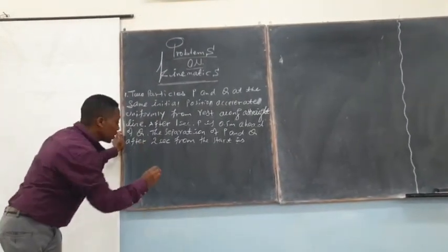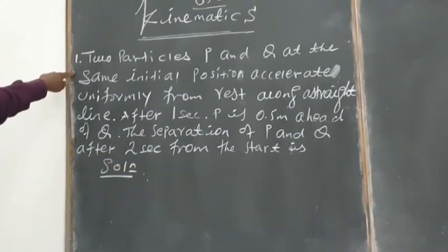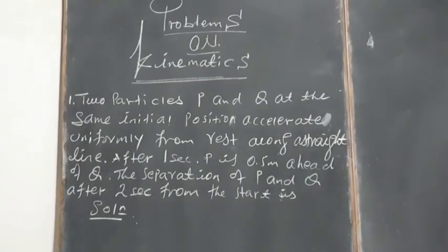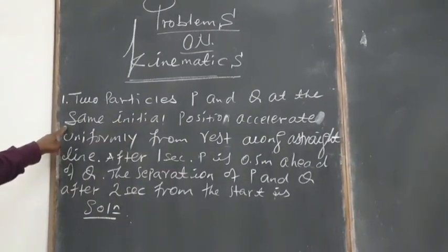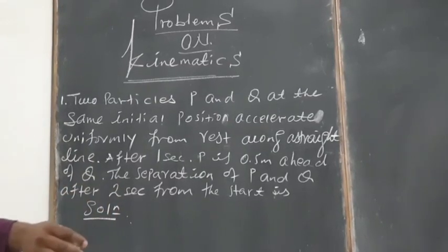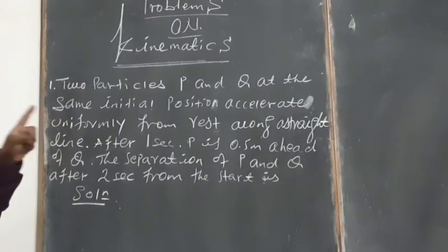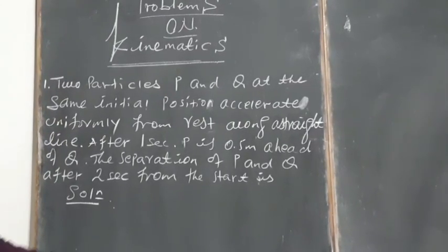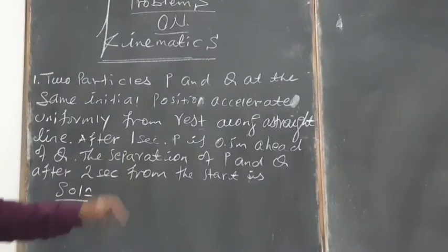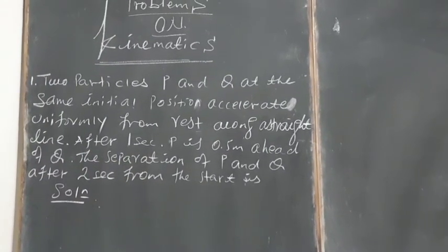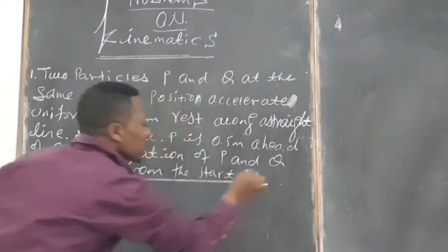What does it say? Two particles P and Q at the same initial position accelerate uniformly from rest along a straight line. After one second, P is 0.5 meter ahead of Q. Find the separation of P and Q after two seconds from the starting line. Great.